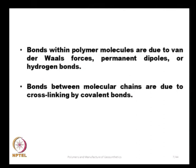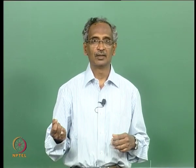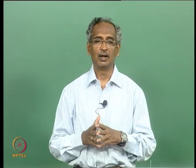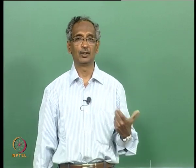The bonds within polymer molecules are due to van der Waals forces, permanent dipoles, and hydrogen bonds. The bonds between molecular chains are due to cross-linking by covalent bonds. These bonds are very similar to what we study in clay soils in terms of secondary and primary bonds. We can imagine a polymer as something like a clay, where individual units are all bonded together to produce a mass.